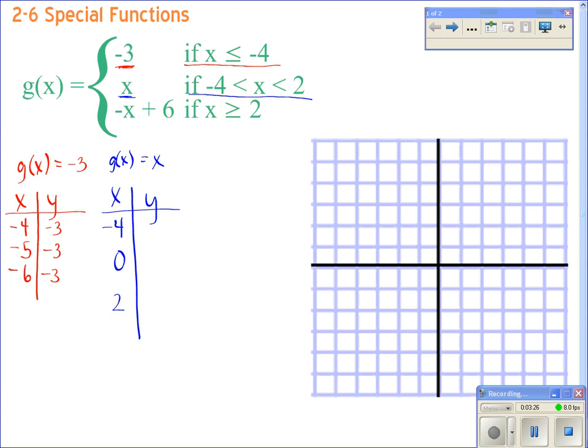If we put a negative 4 in for x, what's our answer? Negative 4. If we put in a zero, what do we get? Zero. If we put in a two, what do we get? Two.